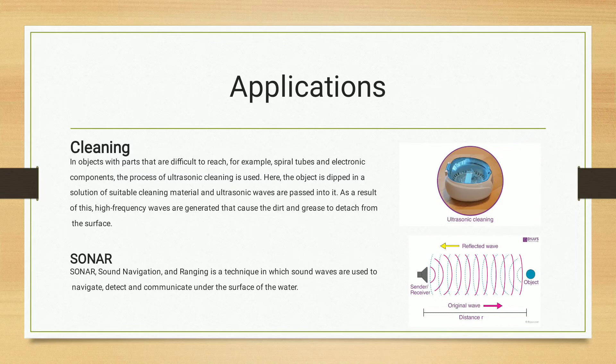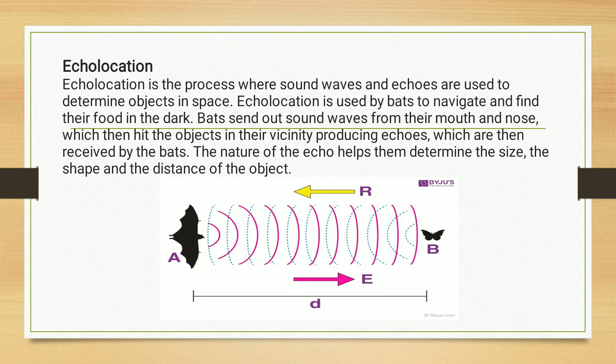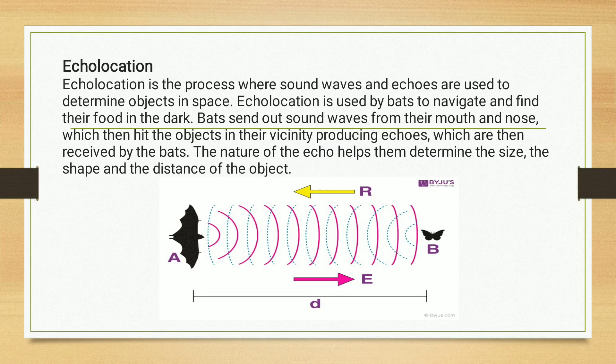There are many applications of ultrasound, but here we are going to discuss three applications. First is cleaning, where the object is dipped in a solution of suitable cleaning material and ultrasonic waves are passed into it. As a result, high-frequency waves are generated that cause the dirt and grease to detach from the surface. Next is SONAR, sound navigation and ranging, a technique which sound waves are used to navigate, detect, and communicate under the surface of the water. Next is echolocation. Echolocation is used by bats to navigate and find their food in the dark. Bats send out sound waves from their mouth and nose.